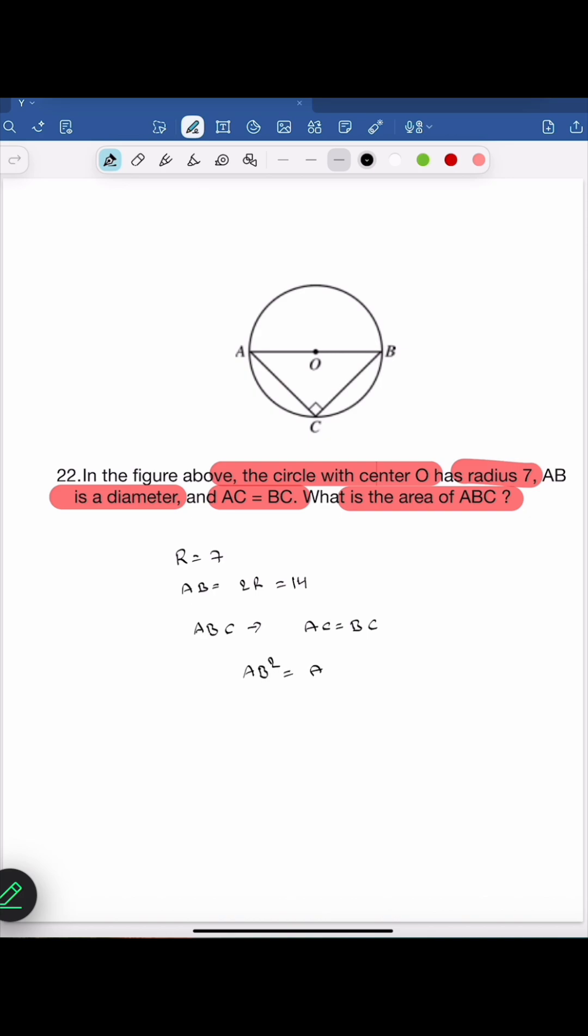AB square is equals to AC square plus BC square. Here we know AB is diameter of the circle, it is 14. 14 square is equals to AC square plus BC square and we also know AC is equals to BC as it is the isosceles triangle. So it is 2 times AC square.